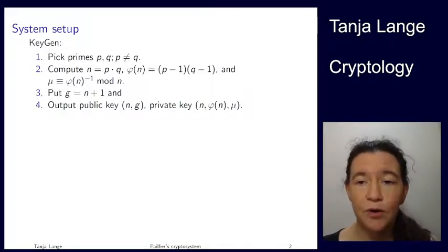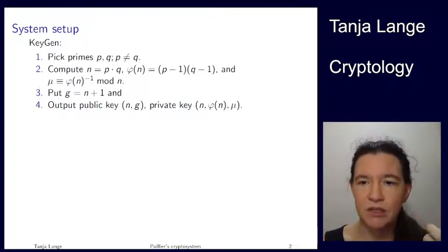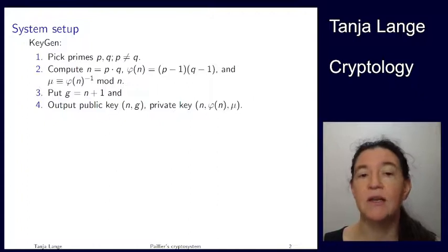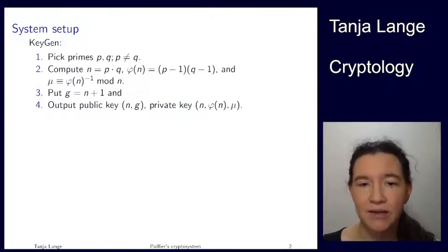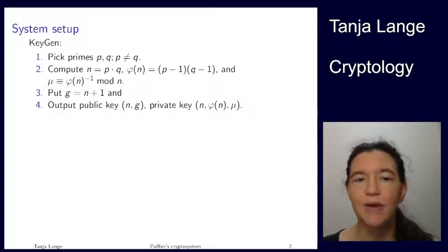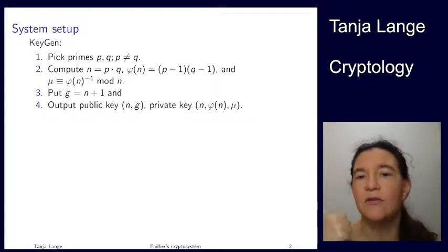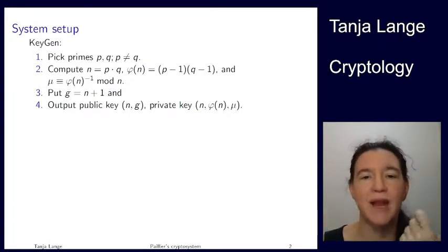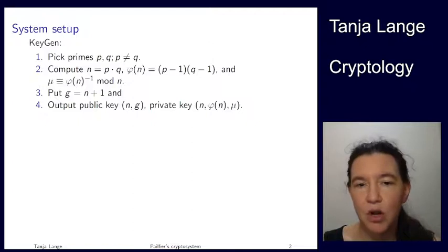But if you want a homomorphic cryptosystem, chances are that actually what you want is to be able to add the messages by doing operations with ciphertexts rather than what ElGamal and RSA offer you, which is to multiply the messages. Paillier's cryptosystem is very nice in that it allows you to do exactly that. So it's an additively homomorphic cryptosystem. And it's also intellectually stimulating because it nicely combines features from the RSA cryptosystem and from the ElGamal or discrete log cryptosystems. So let's jump right in.